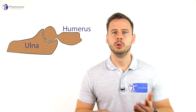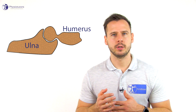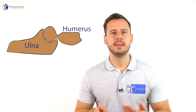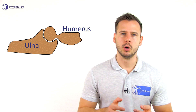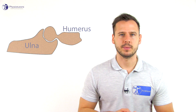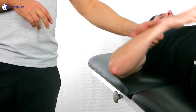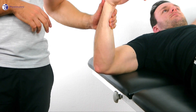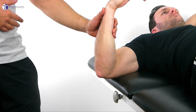For this assessment the patient lies supine. In the case of the humeral ulnar joint, the humerus is the convex joint partner and the ulnar is concave, so we will roll and glide in the same direction. Abduct the patient's arm to around 70 degrees while you stand lateral to it.